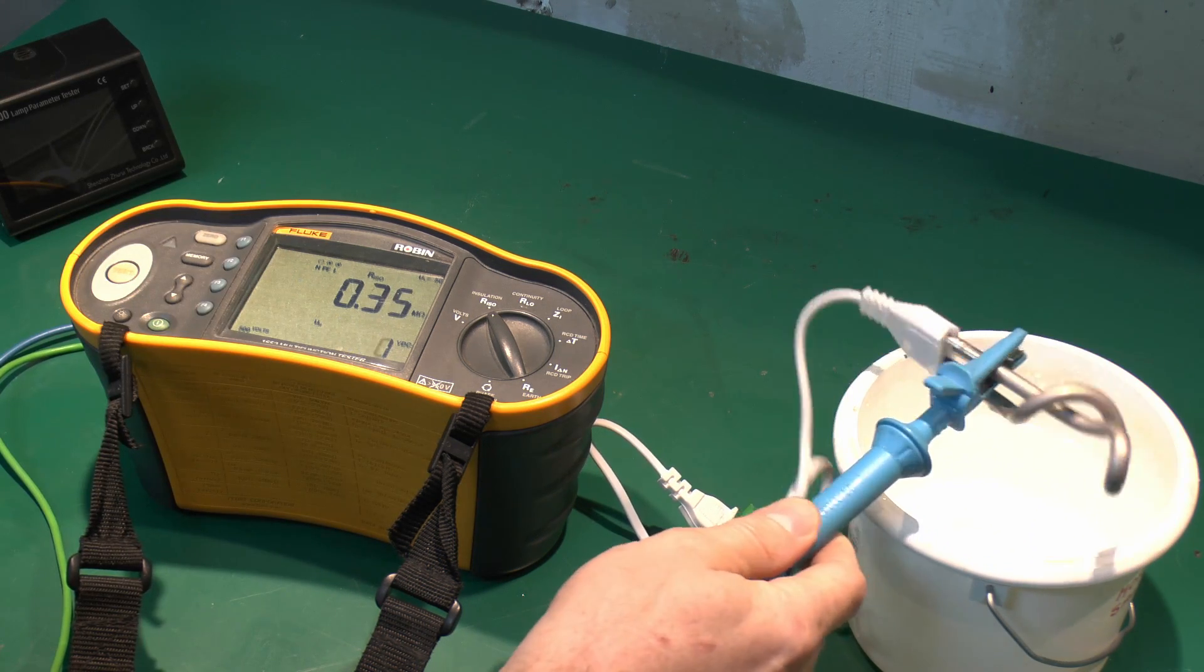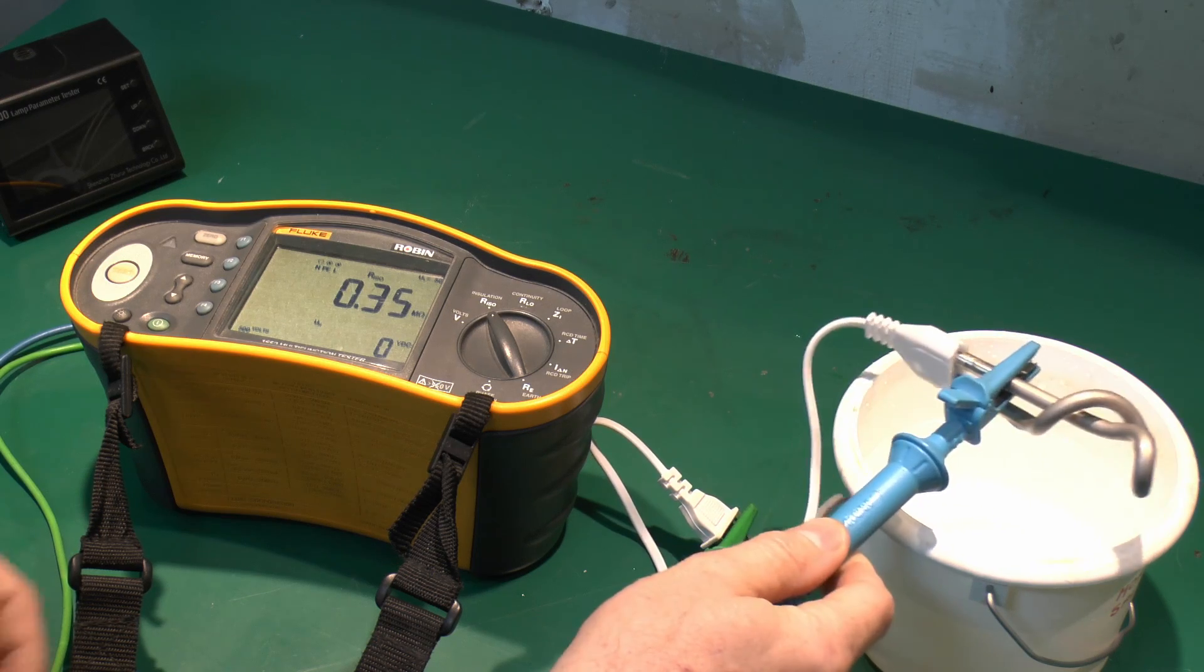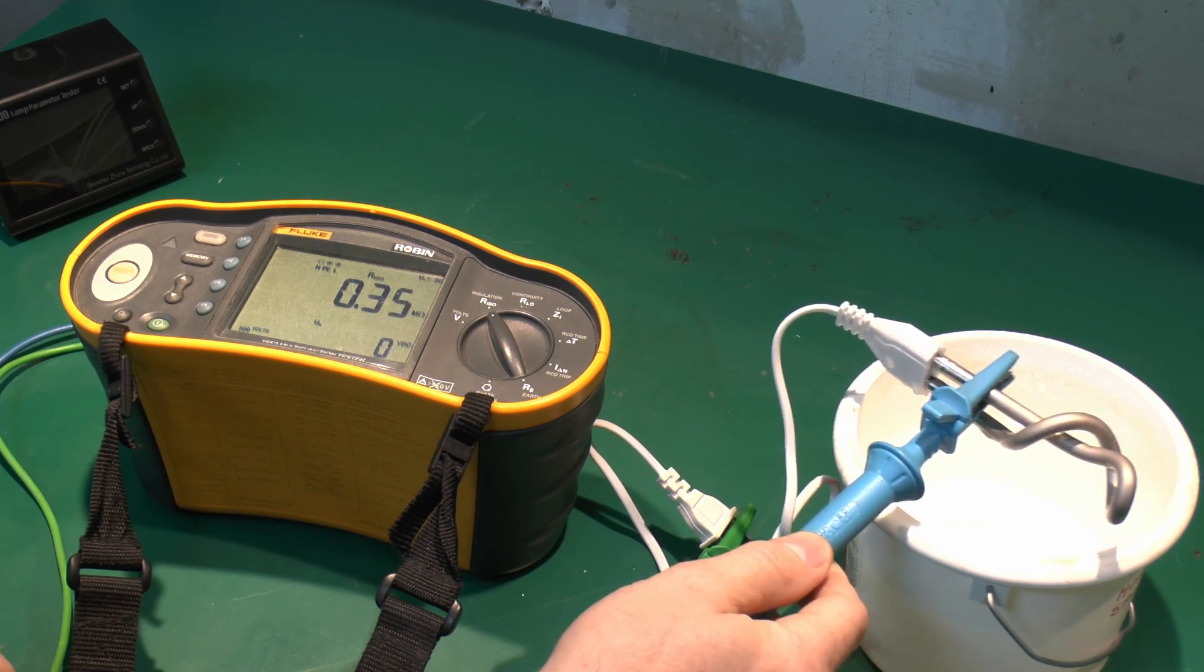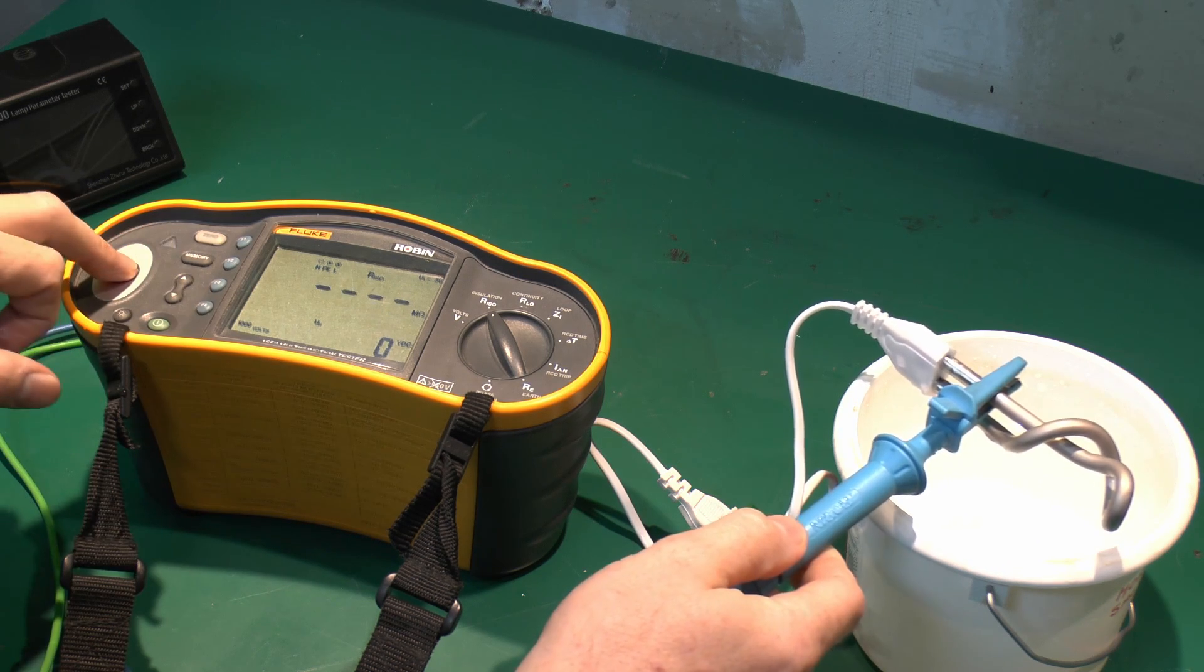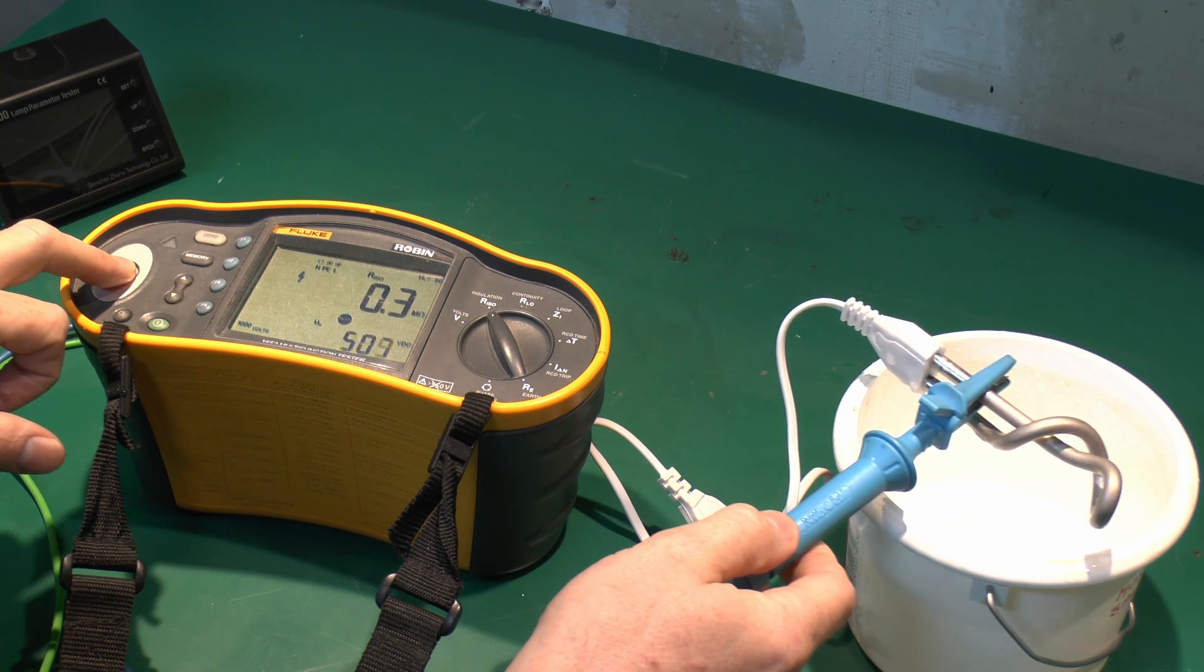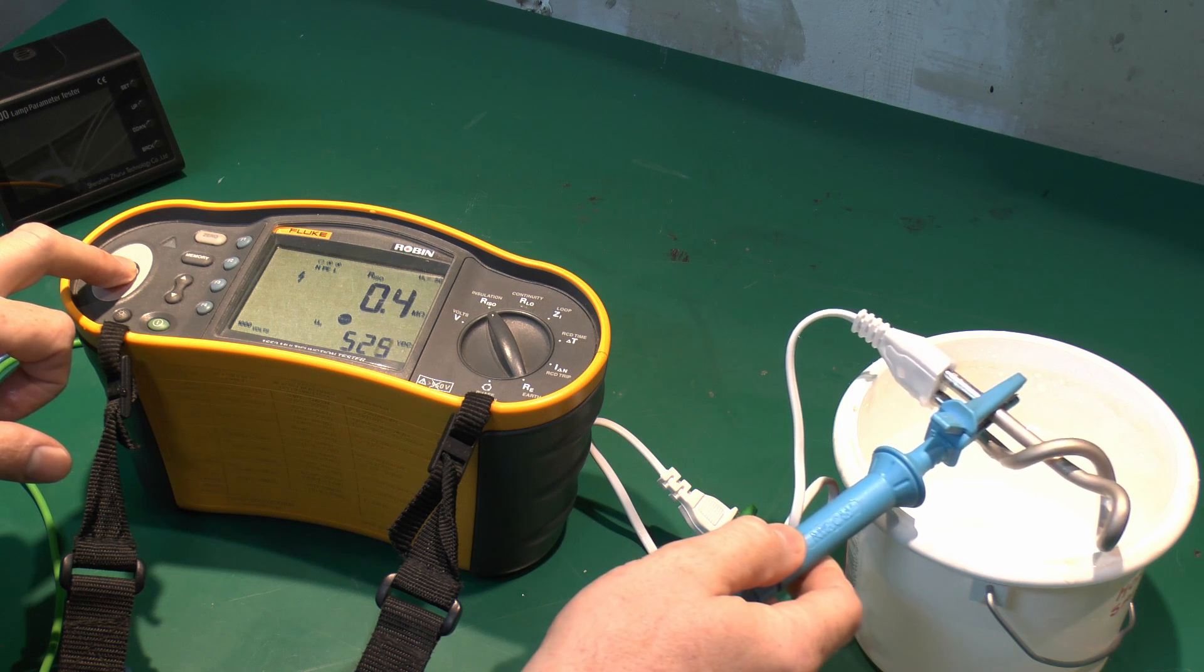Again, 0.3 is still a fail, and so we're looking for something in the region of 1+, and even 1+ would still be highly marginal. We'd really want something in the tens at the very least. Again, on the 1000 volt range, yeah, 0.3 pretty much as we had before.